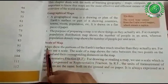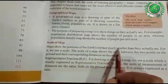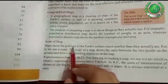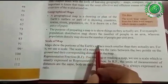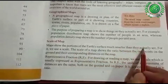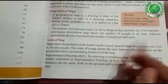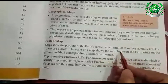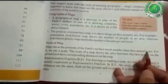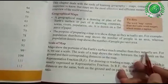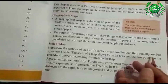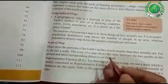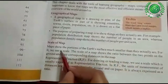Scale of map: maps show the portion of the earth's surface much smaller than they actually are. The earth is so big — the world is so big — we can't show it in its actual shape because we can't draw such a big earth on paper. So it is shown in a small shape, and for this we use a scale.